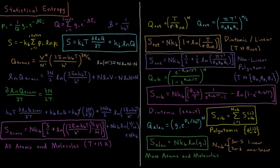The rotational partition function is (T / σ θ_rot)^N, where T is temperature, σ is the symmetry number, and θ_rot is the rotational temperature, which can be looked up in tables for simple molecules. Sigma equals 1 for heteronuclear diatomics and 2 for homonuclear diatomics. Taking the natural log and derivative with respect to temperature, the rotational entropy for a diatomic or linear molecule at temperatures much greater than θ_rot is Nk times (1 + ln(T / σ θ_rot)).